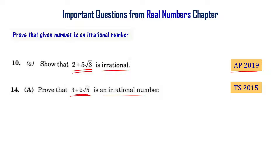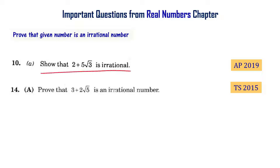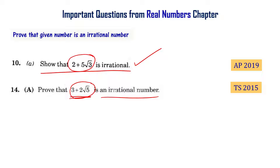This particular kind of question is very important. Look at these problems: show that 2 plus 5 root 3 is an irrational number, and prove that 3 plus 2 root 5 is an irrational number. We want to understand how to solve this kind of problem. I am going to discuss how to show that 2 plus 5 root 3 is an irrational number, and once you understand this key problem, you will be able to solve the other problem also.